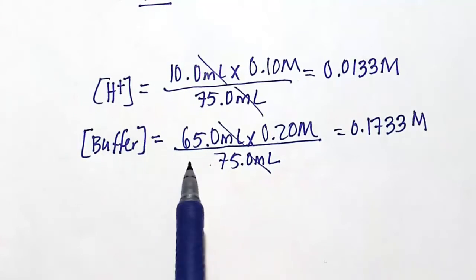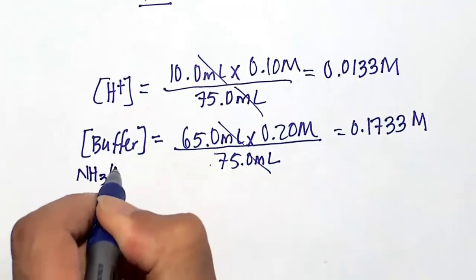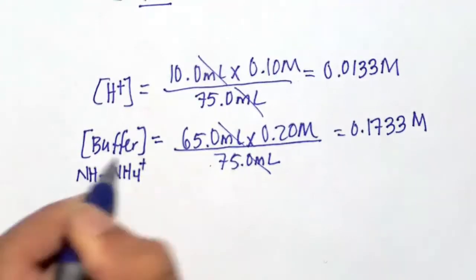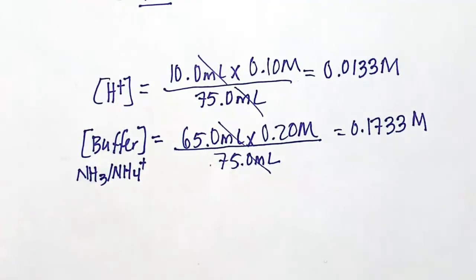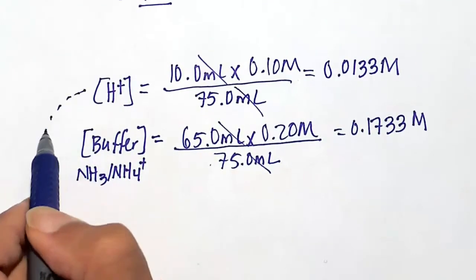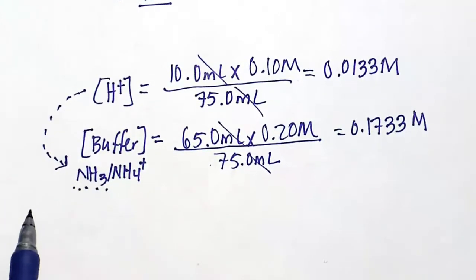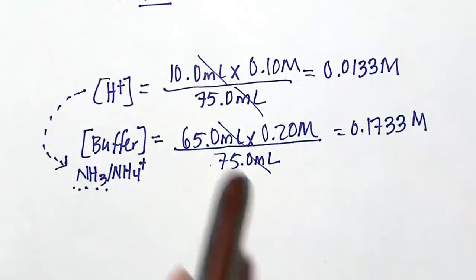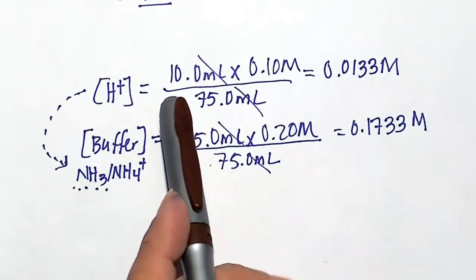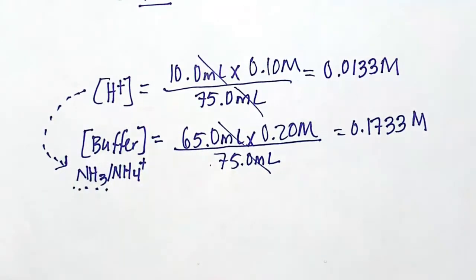Don't forget our buffer here is in the capacity of NH3 and NH4+. But really, any acid will react with the NH3. Any base will react with the NH4+. Now, when we add the strong acid in the form of HCl, what happens is that it will react with the NH3. That is, in essence, what a buffer is. If we add a base, it will react with the NH4+. But in this problem, we're adding an acid, a strong acid, HCl.